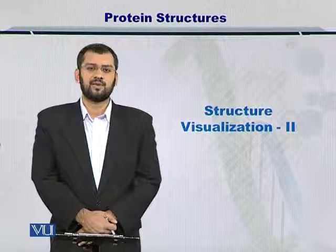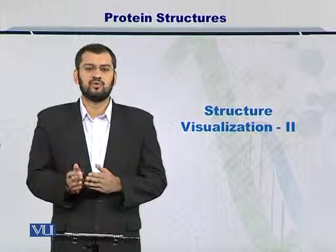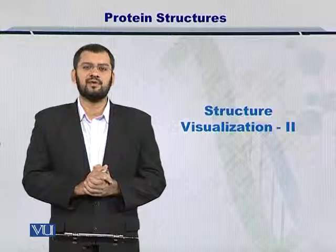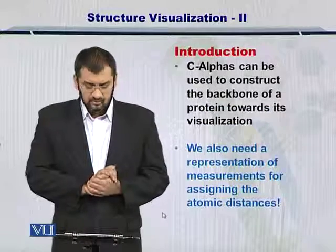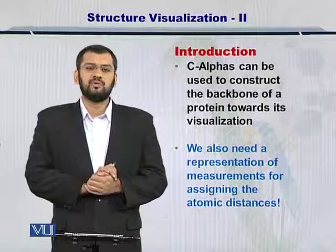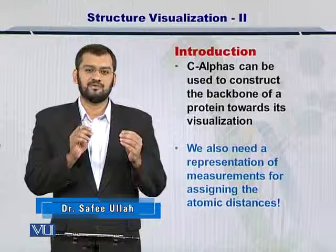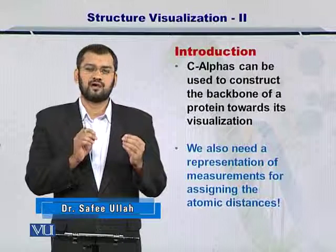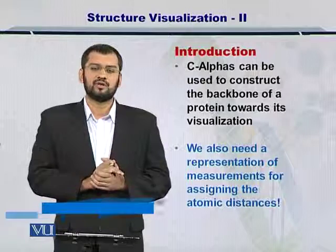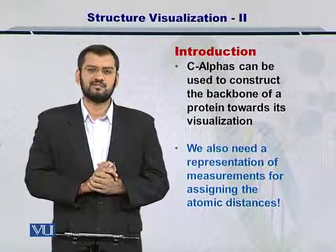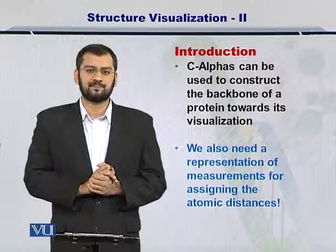Besides knowing how many alpha carbons are there within the protein, you also want to know where these alpha carbons are located. Towards that, we need to be able to measure the distance between various alpha carbons, and for that we need different experimental apparatuses which are used to measure such small distances between different atoms in a protein.